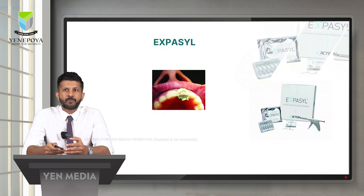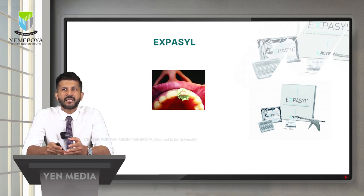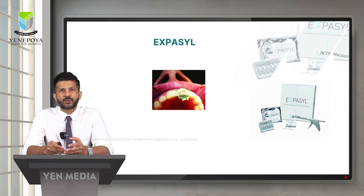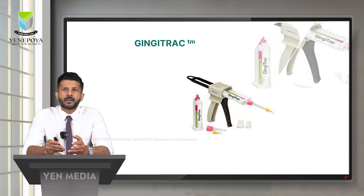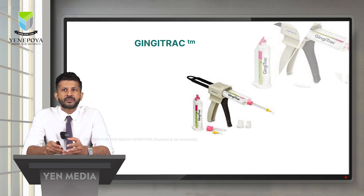Expasyl is a viscous synthetic paste consisting of 10 percent aluminum chloride and 80 percent kaolin with water and modifiers. The kaolin gives the material its physical properties and paste-like consistency to physically displace the gingival tissue, while the aluminum chloride acts as a hemostatic agent to control hemorrhage. Gingitrac comes in combination with foamy cylinders in large and regular sizes to encircle the tooth. The technique involves inserting polyvinyl siloxane paste into the gingival sulcus, then placing a foamy cylinder filled with more retraction paste onto the tooth and directing the patient to exert biting pressure for 3 to 5 minutes.